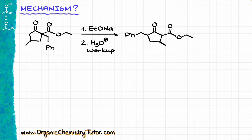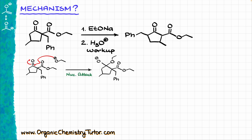I'll start by redrawing my starting material and the ethoxide we have as the reagent. Out of my two carbonyls, the ketone is going to be more electrophilic, so my first step in this mechanism is going to be the nucleophilic attack onto my ketone, giving me the following intermediate.